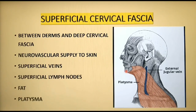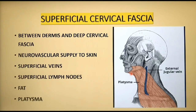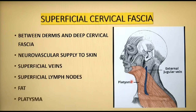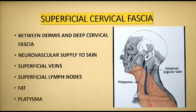Superficial cervical fascia contains the neurovascular supply to the skin, superficial veins and lymph nodes, fat, and the platysma muscle. It is thinner on the anterior aspect of the neck with a very thin amount of fat, which is its distinguishing characteristic. At the anterior neck, the superficial fascia blends with the platysma. Platysma is a broad superficial muscle which originates from the fascia over the pectoralis major and deltoid, and its fibers cross the clavicle and meet in the midline, fusing with the muscles of the face.